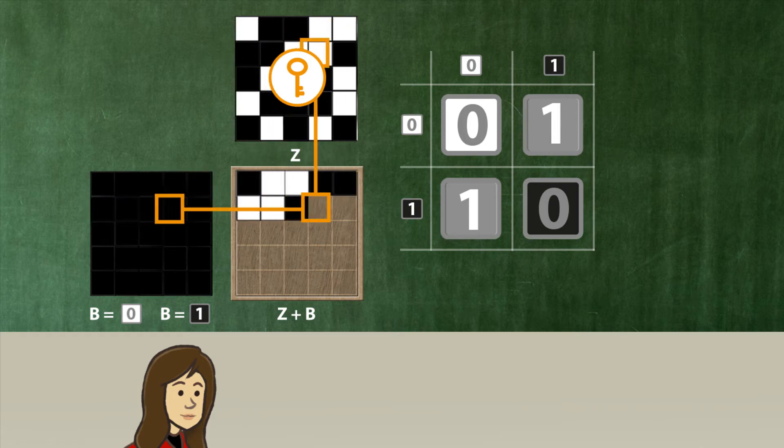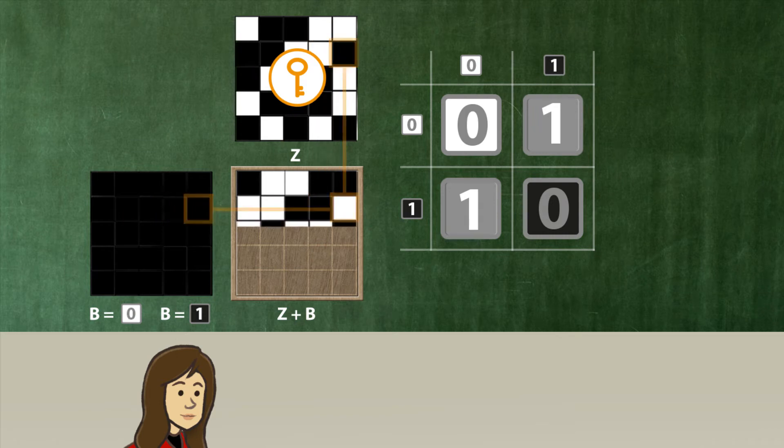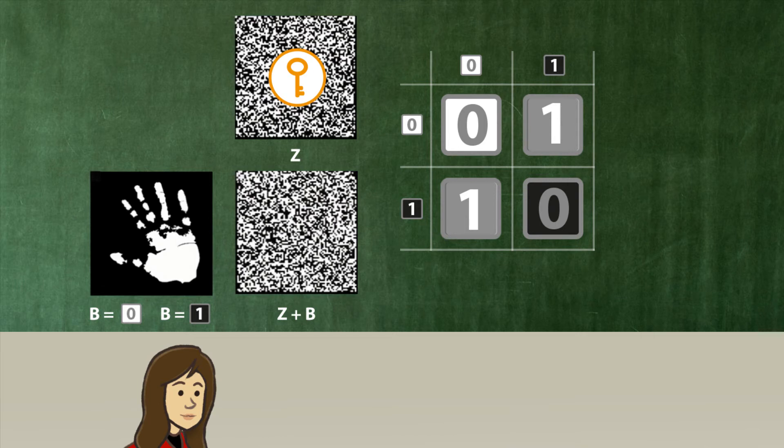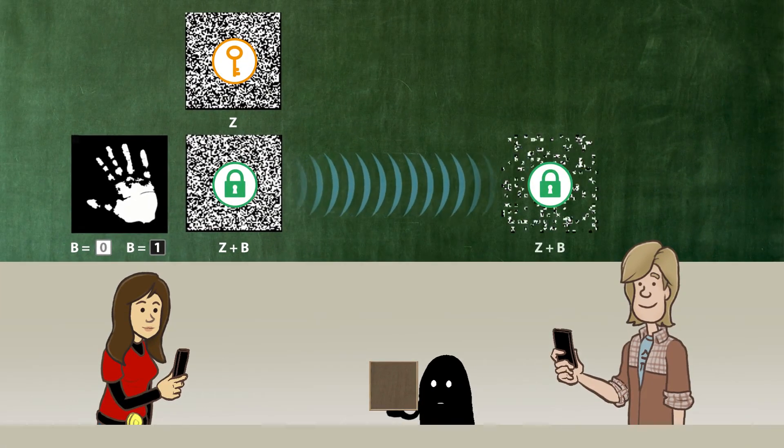What emerges is a random pattern z plus b that no longer contains any information. Z plus b can thus be publicly transmitted without any problem.